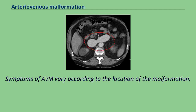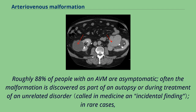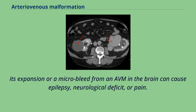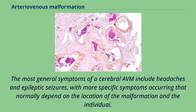Symptoms of AVM vary according to the location of the malformation. Roughly 88% of people with an AVM are asymptomatic. Often the malformation is discovered as part of an autopsy or during treatment of an unrelated disorder. In rare cases, its expansion or a micro bleed from an AVM in the brain can cause epilepsy, neurological deficit, or pain. The most general symptoms of a cerebral AVM include headaches and epileptic seizures, with more specific symptoms depending on the location of the malformation and the individual.